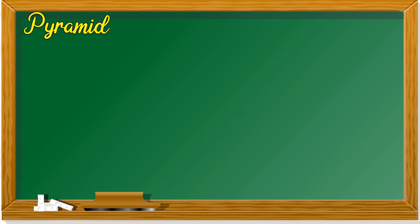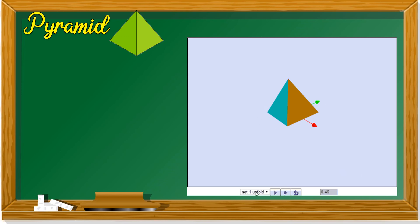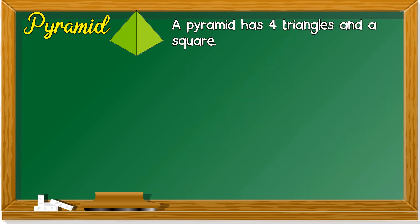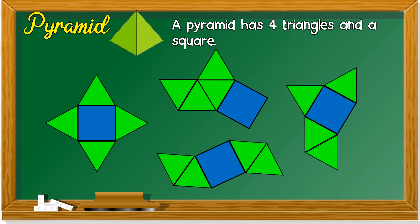Next up, pyramid. Pyramid looks like this — it has four triangle faces and one square face. So a pyramid has four triangles and a square. It can look like this, or like this, or like this, as long as when you fold it, it becomes a pyramid.